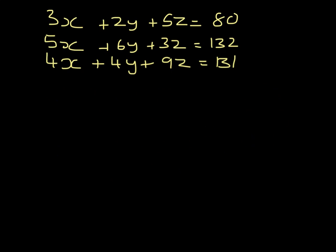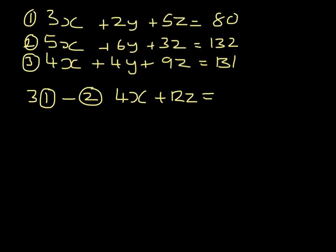I know I have 3 equations and 3 unknowns to solve, and I'm going to eliminate y. So I'm going to multiply 3 by equation 1 and subtract equation 2. So I have 9x take away 5x, 4x, 6 take away 6 which is 0, 15 take away 3 which is 12, and 240 take away 132 which is 108. Dividing everything by 4, 3x plus 3z has to equal 27.